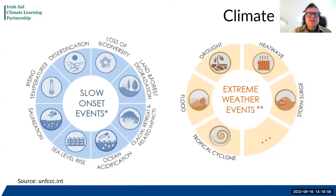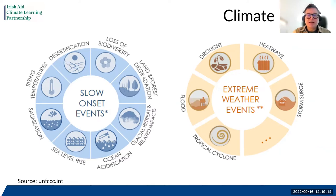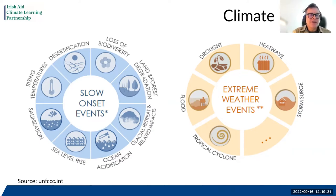Loss and damage can result from a range of different climate hazards. We've already heard about the floods in Pakistan, the drought in Somalia and the Horn of Africa — extreme weather events are obviously on our radar as events that cause loss and damage. But we also need to consider slow onset events, which are manifold: from desertification, loss of biodiversity, and glacier melt to sea level rise, and rising temperatures that may make places very difficult to live in.